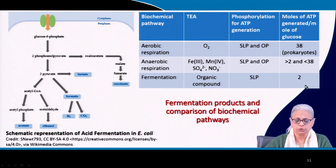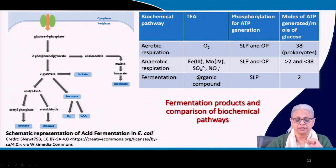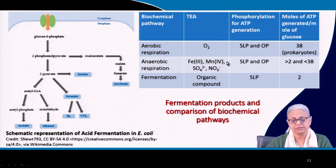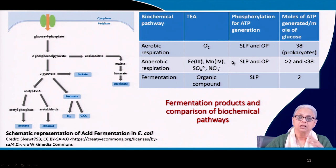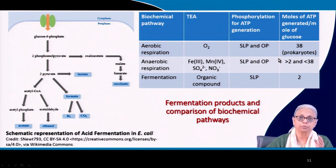In anaerobic respiration, the possible terminal electron acceptors include Fe3+, Mn4+, sulfate, nitrate, and others. Both SLP and OP occur, giving values between 2 and 38 ATP depending on the terminal electron acceptor. The maximum is 38 ATP (aerobic respiration) and the minimum is 2 ATP (fermentation).